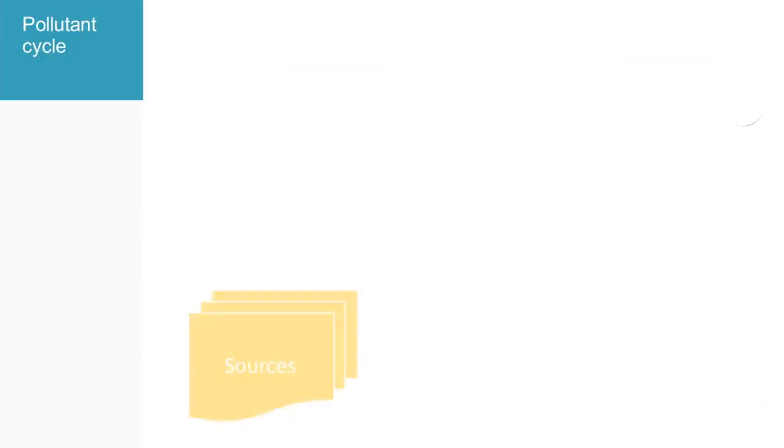Whatever the environment, indoor or outdoor, a wide variety of sources can emit pollutants directly into the air. These are therefore classified as primary pollutants.